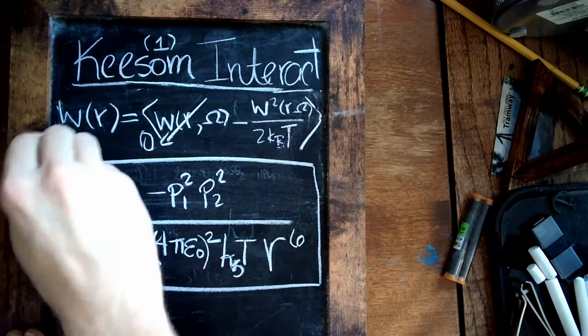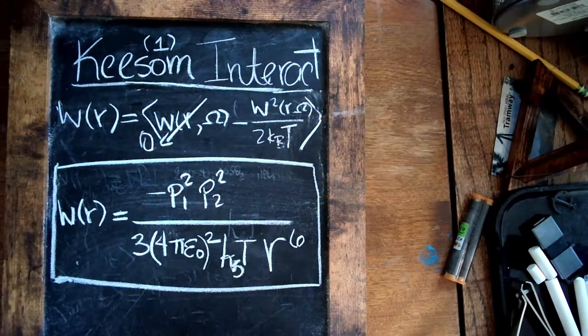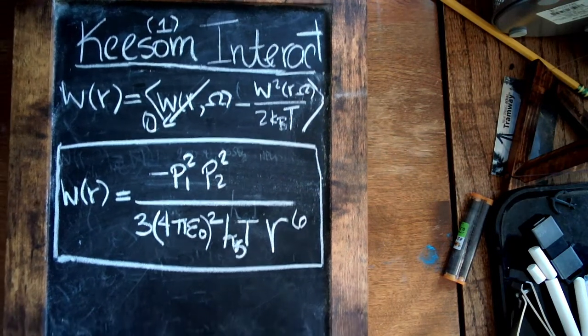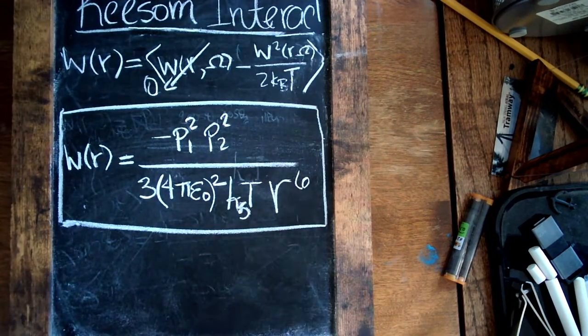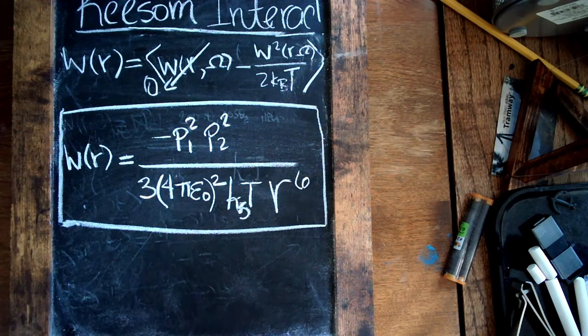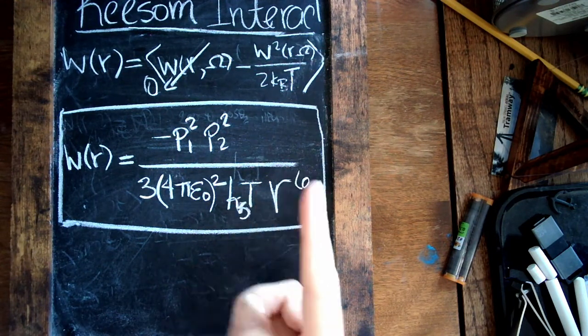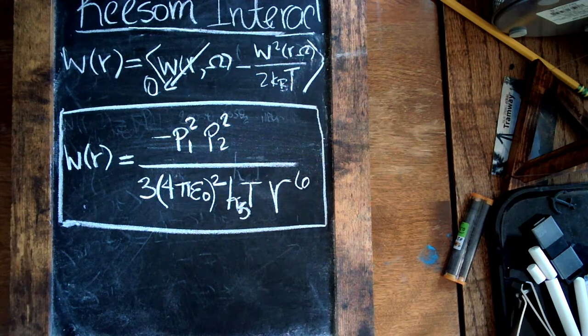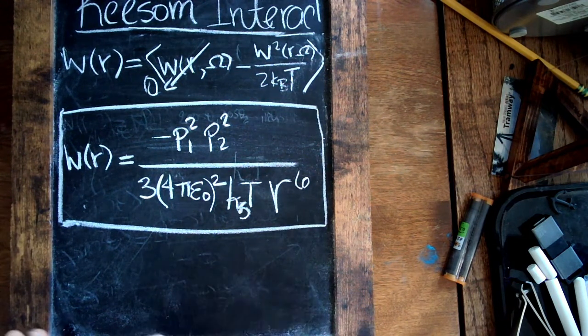So this is the interaction energy between two dipoles that are free to rotate in space with respect to each other as a function of only the distance between them. This is the Keesom energy and the first of the 1/r⁶ dependencies that make up the van der Waals force.